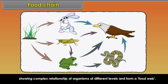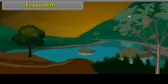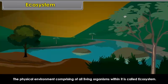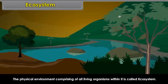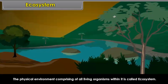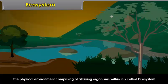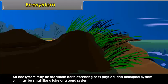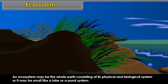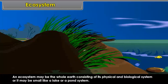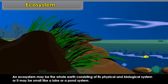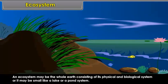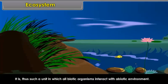The physical environment comprising all living organisms within it is called ecosystem. An ecosystem may be the whole earth consisting of its physical and biological systems, or it may be small like a lake or a pond system. It is a unit in which all biotic organisms interact with the abiotic environment.